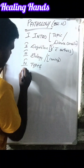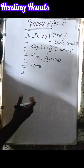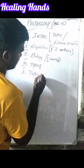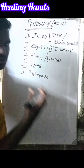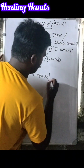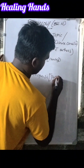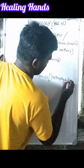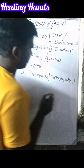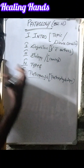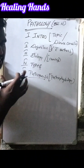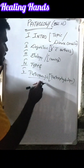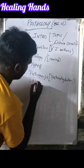Next we should write the pathogenesis. Pathogenesis means pathophysiology — it describes how the disease agent or microorganism is entering into our body. Pathophysiology should be written in a flowchart manner.